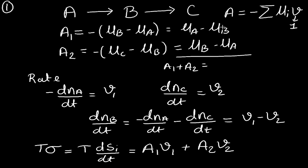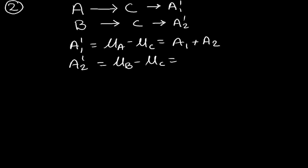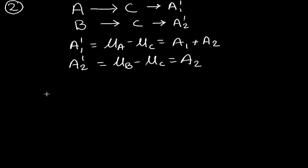When we add A1 + A2, the μB terms cancel and we get μA − μC, so A1' = A1 + A2. Similarly, A2' = μB − μC = A2. These are the affinity relationships for the second case.